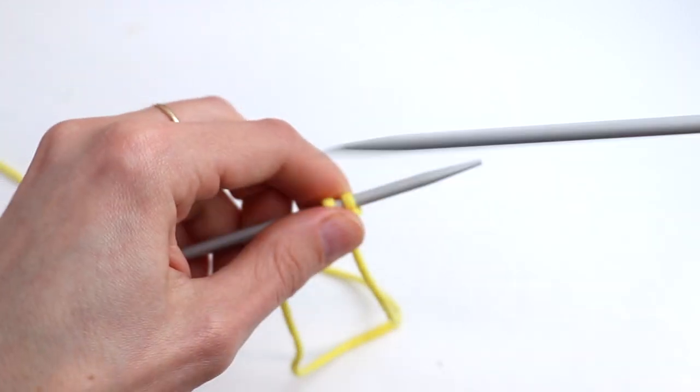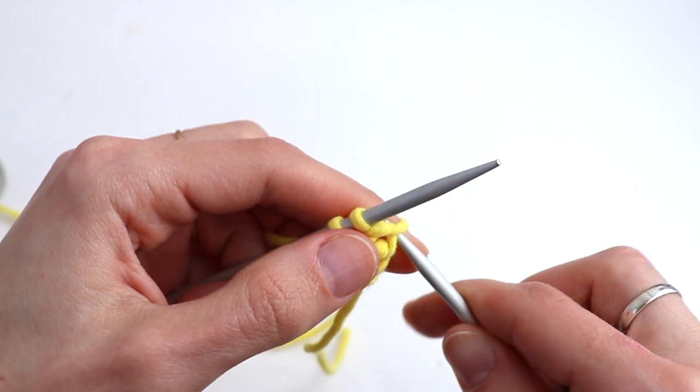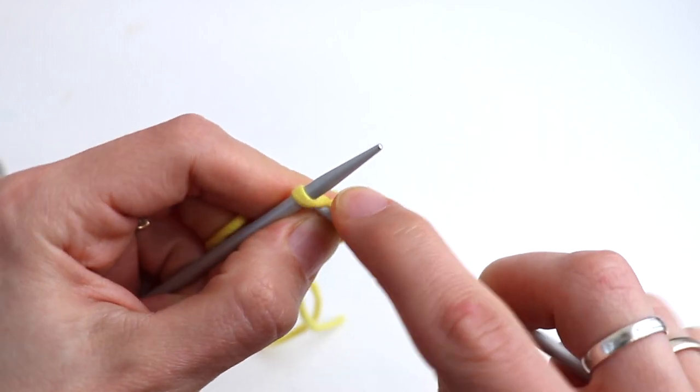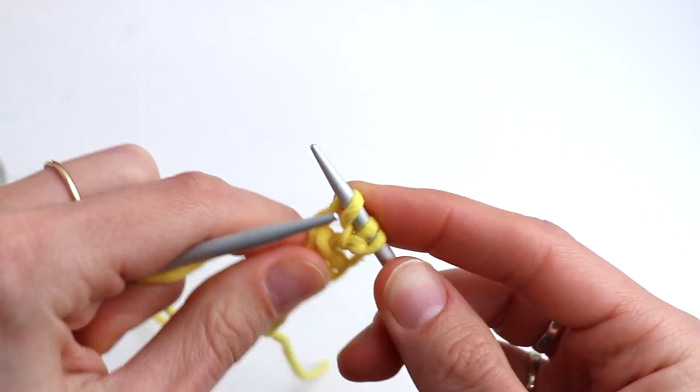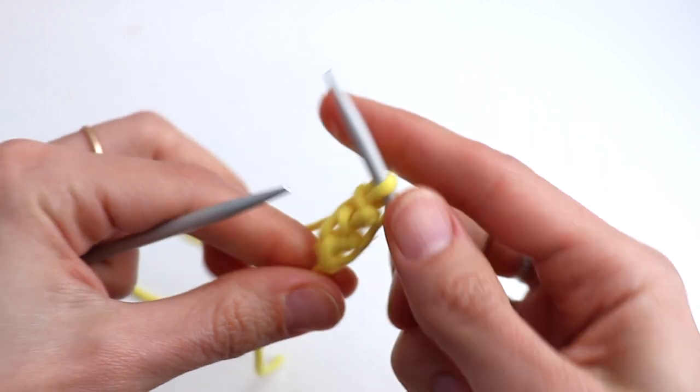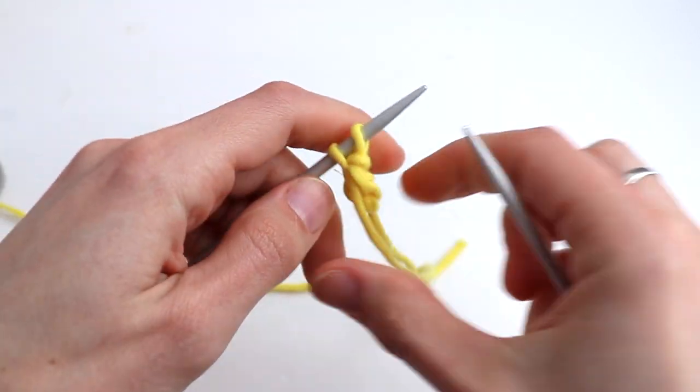And again yarn over, slip, knit one and slip over. Really easy and fast.